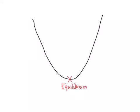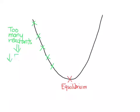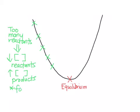If we find ourselves anywhere along this downslope, we have too many reactants. In order to reach equilibrium we have to use up some of our reactants, so we need to decrease the concentration of our reactants and increase the concentration of our products. This reaction would proceed forward to equilibrium.